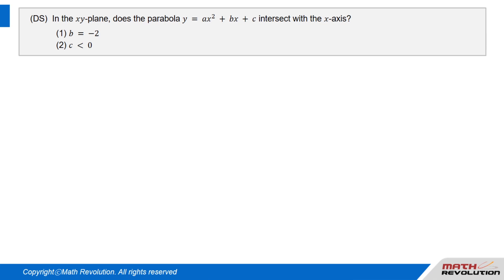In the xy plane, does the parabola y equals a times x squared plus b times x plus c intersect with the x-axis? Condition 1: b equals negative 2. Condition 2: c is less than zero.